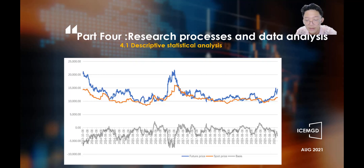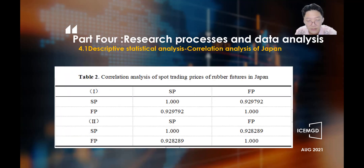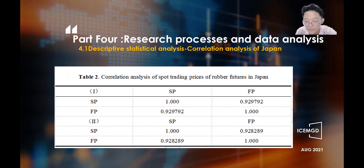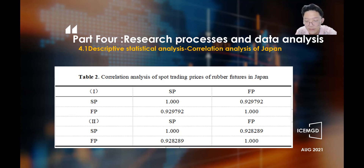From the price chart, it can be seen that the futures and spot prices first decreased slightly and then rose, showing a trend of constant fluctuations. The correlation coefficient between the Japan Rubber RSS3 futures and spot price was calculated. As seen from Table 2, the correlation coefficient between the Japanese Rubber RSS3 futures and spot price in the first period is 0.9297, and in the second period is 0.9282, indicating that both futures and spot prices in the two periods are highly correlated. Moreover, the correlation degree of futures and spot price is greater than that of the domestic market, and the co-movement is closer.